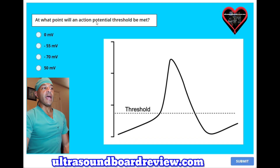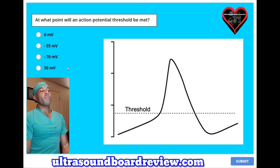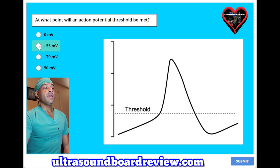At what point will an action potential threshold be met? A. Zero millivolts. B. Negative 55 millivolts. C. Negative 70 millivolts. Or D. 50 millivolts. The answer is B — minus 55 millivolts.